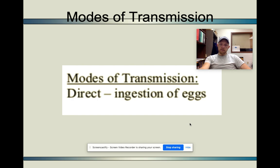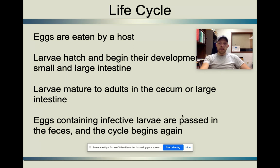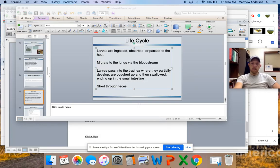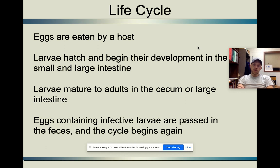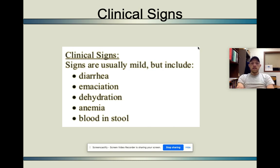The life cycle: the eggs are eaten, the larvae attach and begin their development in the small and large intestine, and they mature in the cecum or in the large intestine. The eggs contain infective larvae that are passed through the feces and then the cycle begins again. If a horse is depositing droppings in a pasture and the larvae aren't left dormant long enough, they could re-ingest them pretty quickly. Signs include diarrhea, emaciation, dehydration, anemia, and blood in the stool.